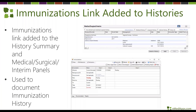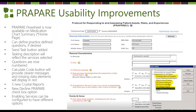An immunization link was added into your medical surgical interim history panel for quick access to immunization history on the fly. The Prepare template and overall prepare process also got updates — the information is organized in a cleaner, easier-to-read way. A neat new feature: if you go to calculate the code and some data elements are missing, those fields will turn red so you get a reminder that information needs to be populated.